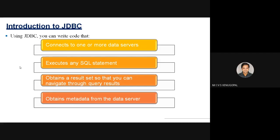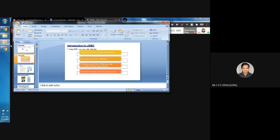Using JDBC, you can write code that connects to one or more databases. Once connected, you can send SQL queries to the database. The database retrieves results, which can be stored in an object called a ResultSet. You can also use JDBC to obtain metadata from a data server — such as the version, name, and supported data types of the database.